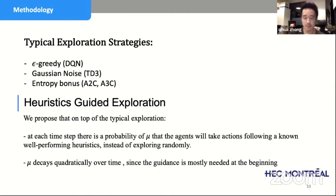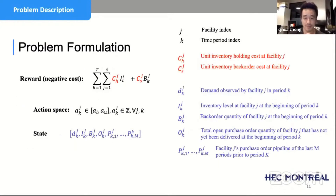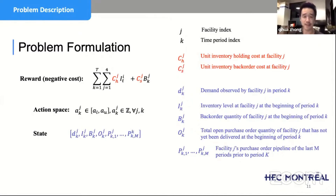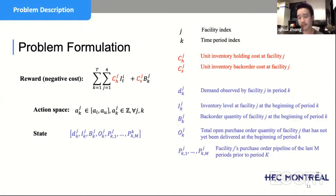Going back to the problem formulation: the idea is to minimize the total cost by taking actions — the ordering quantities. According to the state we are in, the state includes information about demand, inventory level at different places, and how many orders are in the pipeline.